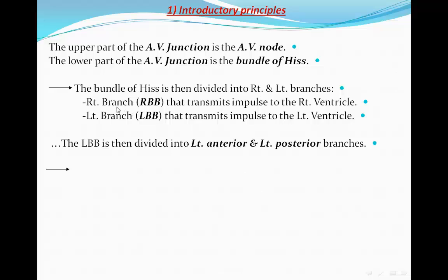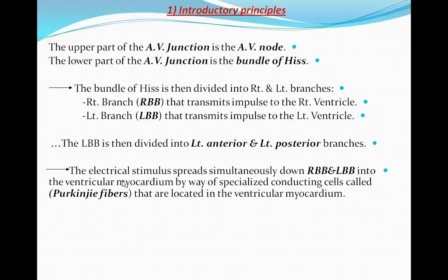The right bundle branch transmits impulses to the right ventricle, and the left bundle branch transmits the impulse to the left ventricle. The left bundle branch is then divided into left anterior and left posterior branches. The electrical stimulus spreads simultaneously down both bundle branches into the ventricular myocardium by way of specialized conducting cells called Purkinje fibers, which are located in the ventricular myocardium.